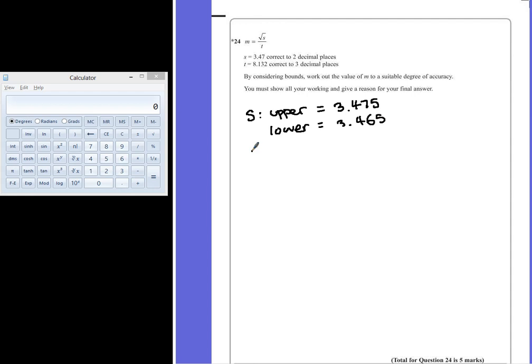Likewise, if we look at the letter t, the highest number this could have been would be halfway towards the next value. So instead of 8.132, we're looking for a number which is halfway towards 8.133, which will be 8.1325. To find the lowest number, we want to find halfway towards the number below it. So halfway between 8.132 and 8.131 would be 8.1315.